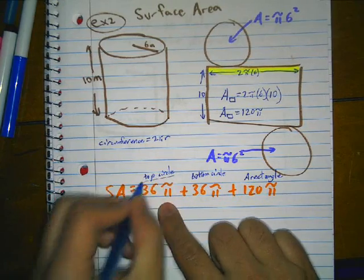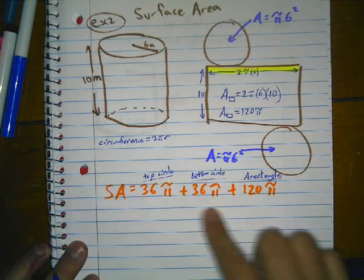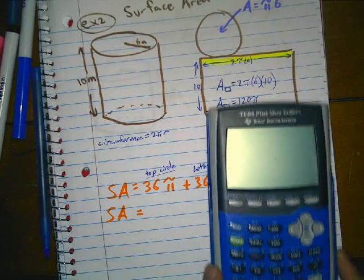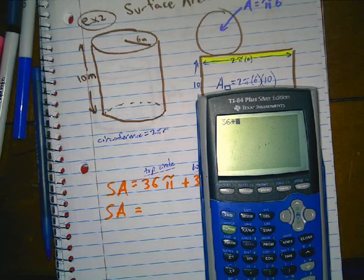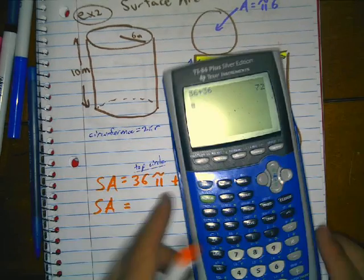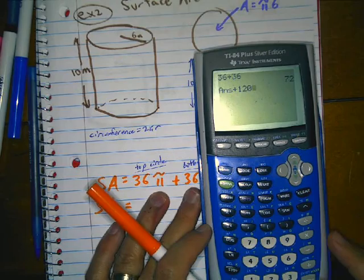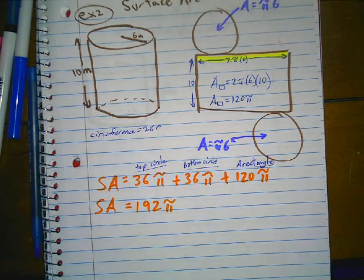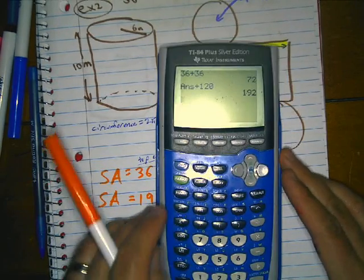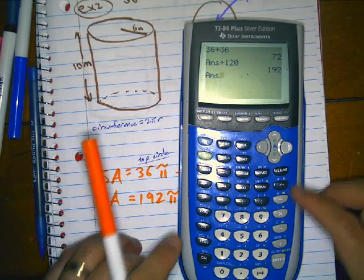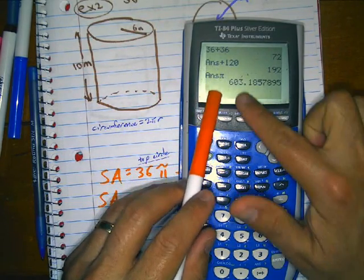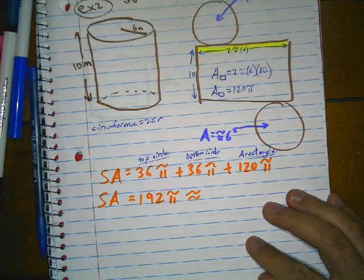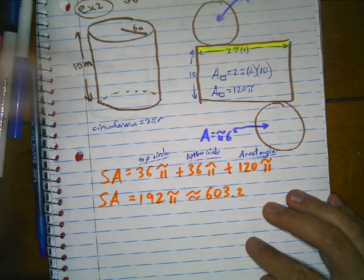So the surface area equals pi times 6 squared plus pi times 6 squared plus 120 pi, which is 36 pi plus 36 pi plus 120 pi. The top circle, the bottom circle, and the rectangle. Adding: 36 plus 36 is 72, plus 120 gives us 192 pi. If you want a decimal answer, multiply 192 by pi to get approximately 603.2 meters squared.